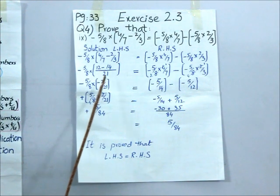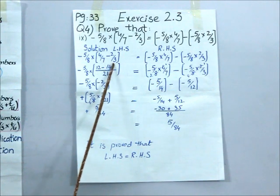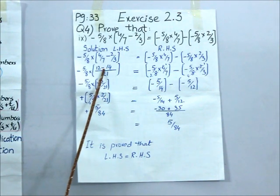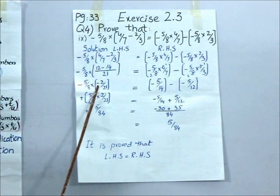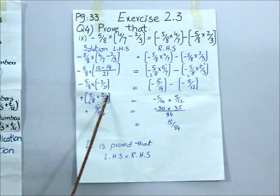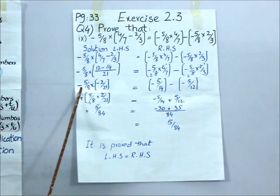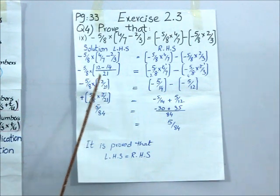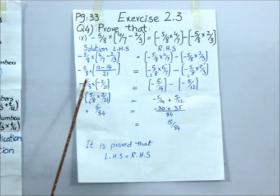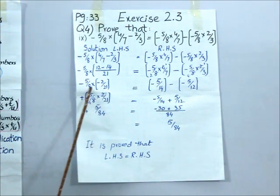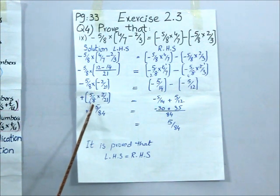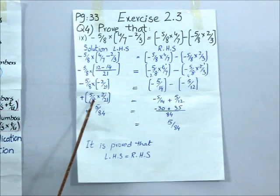There is a subtraction sign between them. Since 14 is greater and has a negative sign, the answer takes the sign of the greater term. Finally the bracket gives minus 2 by 21. Now I open the bracket: minus multiplied by minus is plus, so both terms have a negative sign. I apply the rule of multiplication with 5 by 8 and 2 by 21. Since 2 and 8 are even numbers, cancel by 2: 2 ones are 2, 2 fours are 8. Finally, numerator times numerator and denominator times denominator gives 5 by 84.